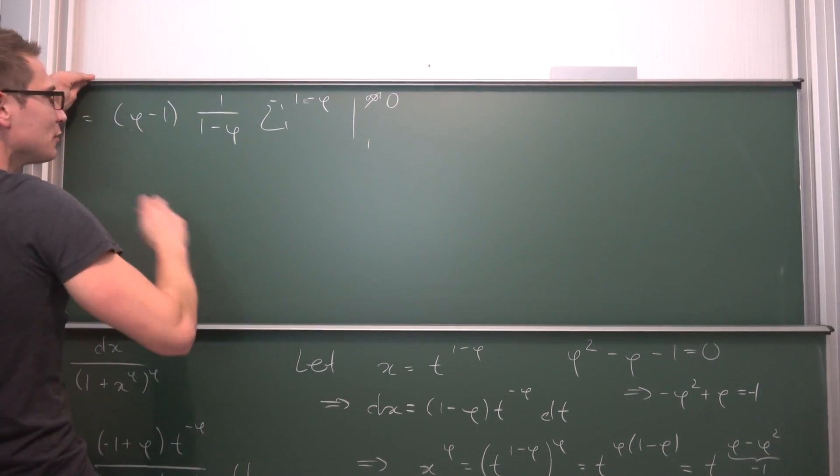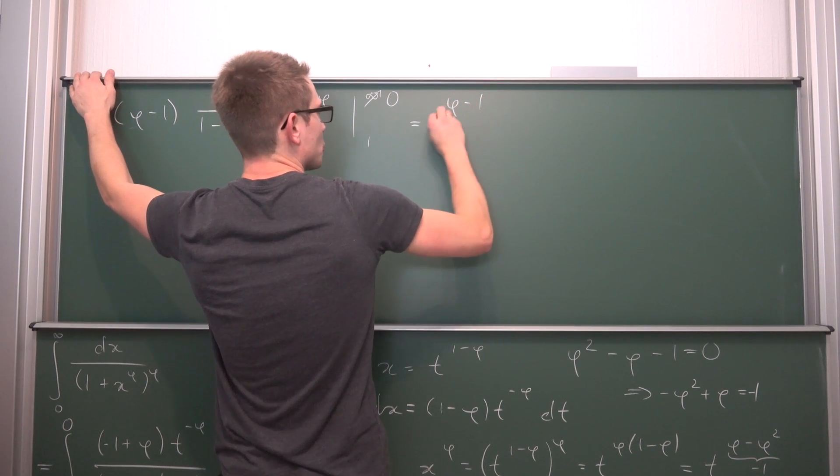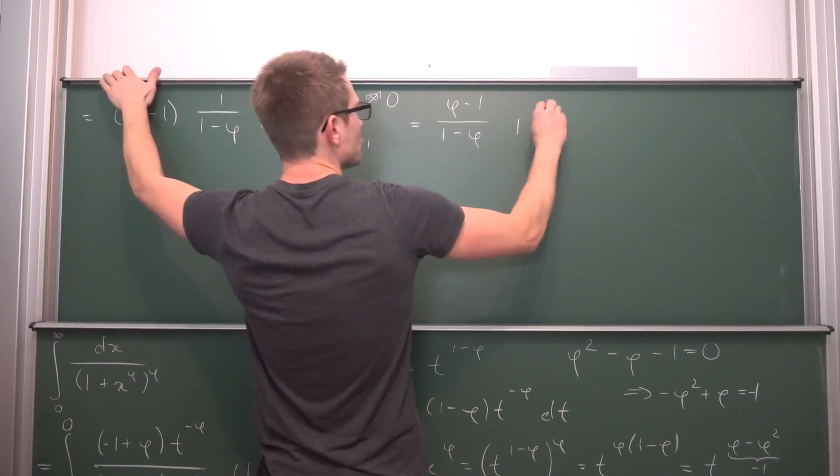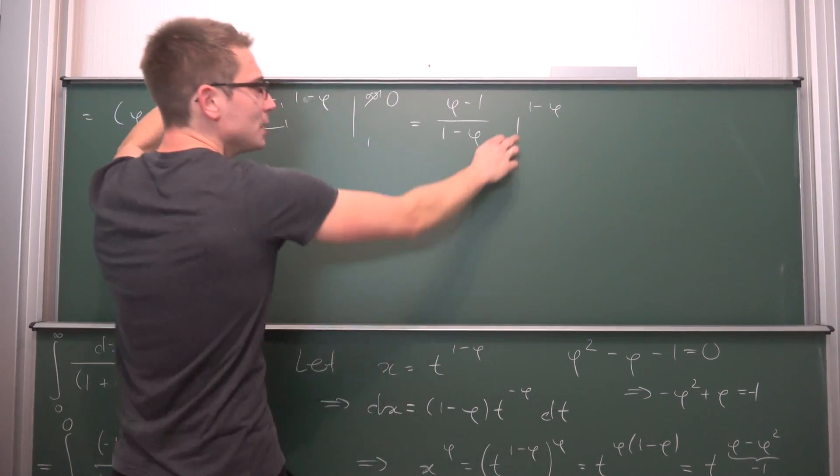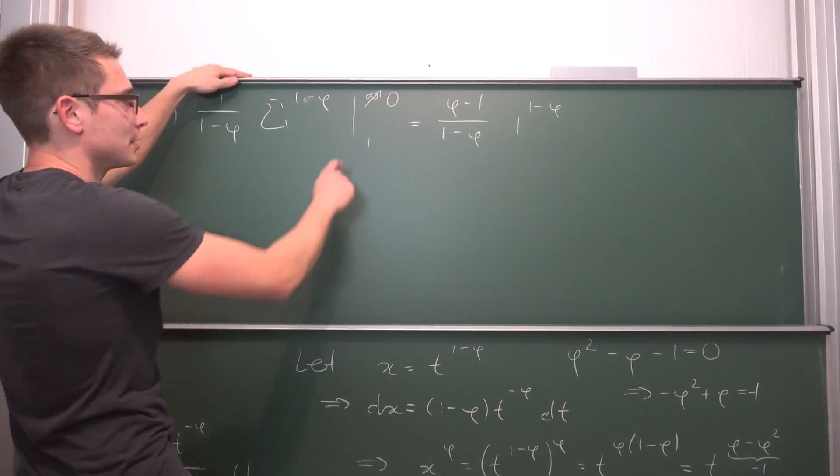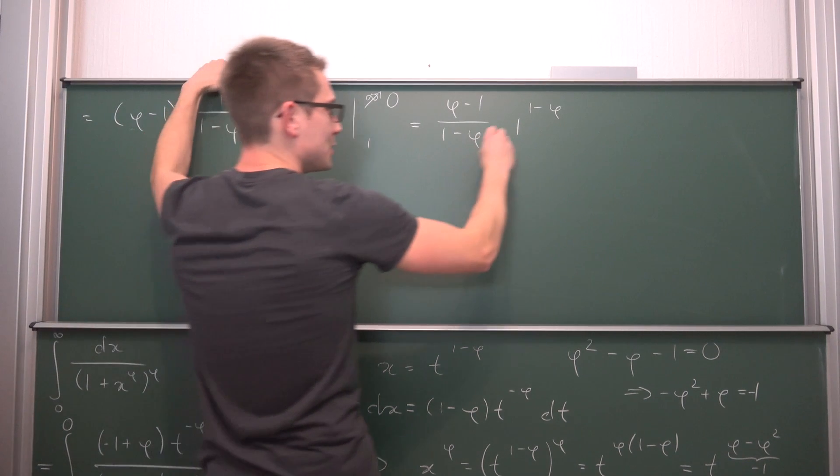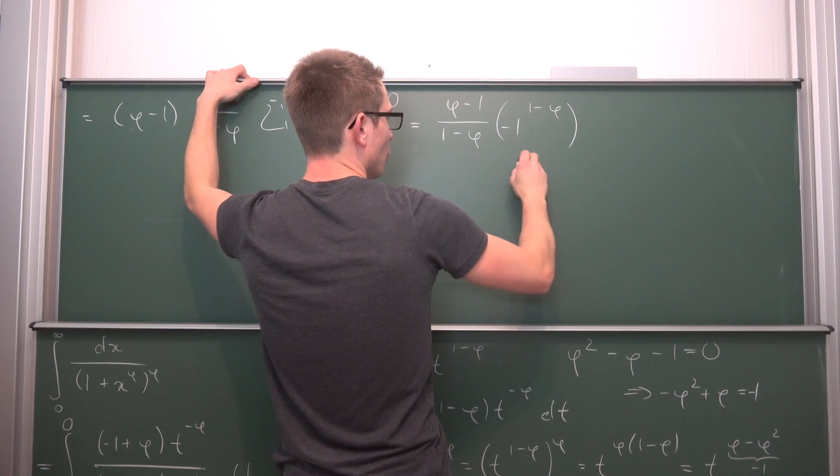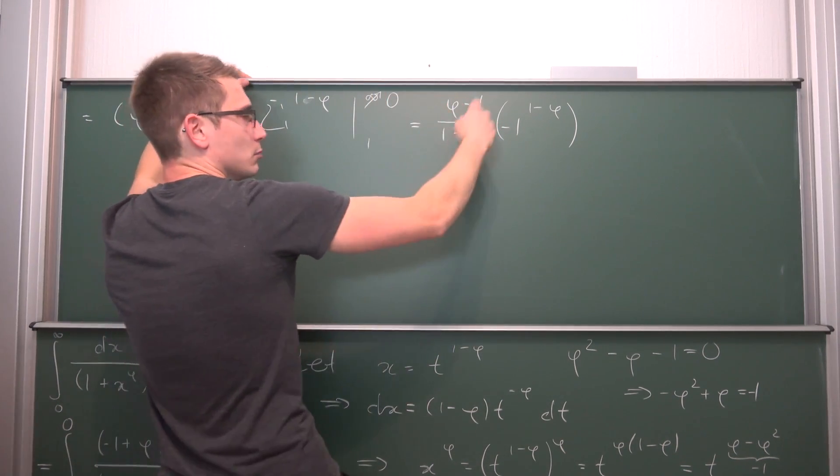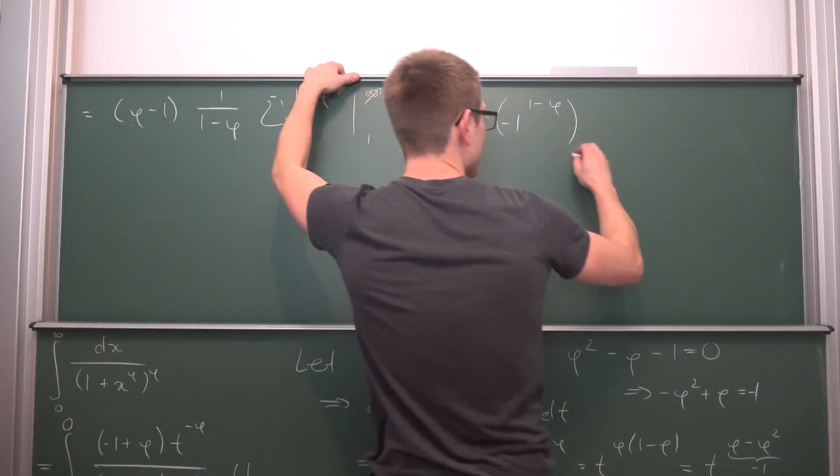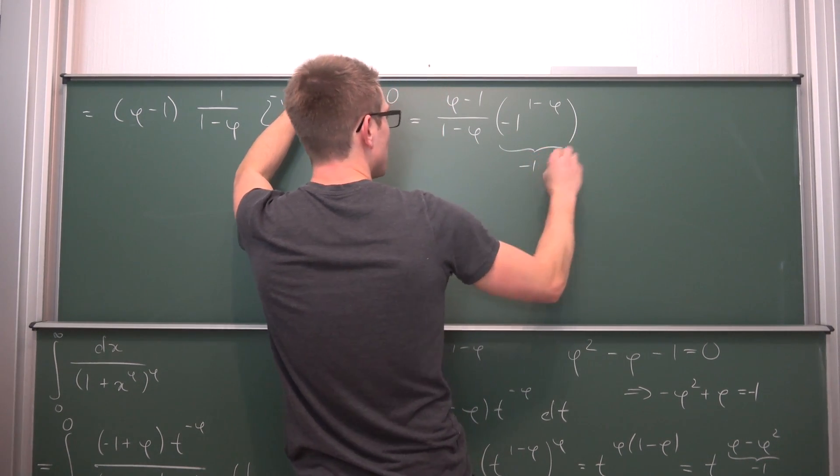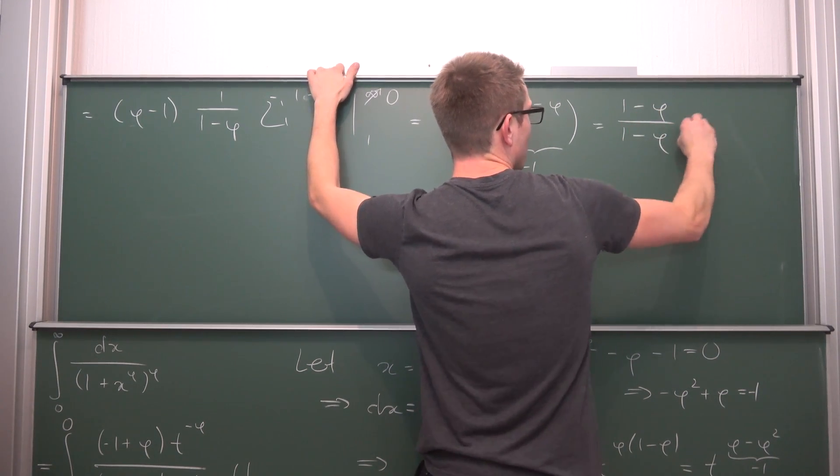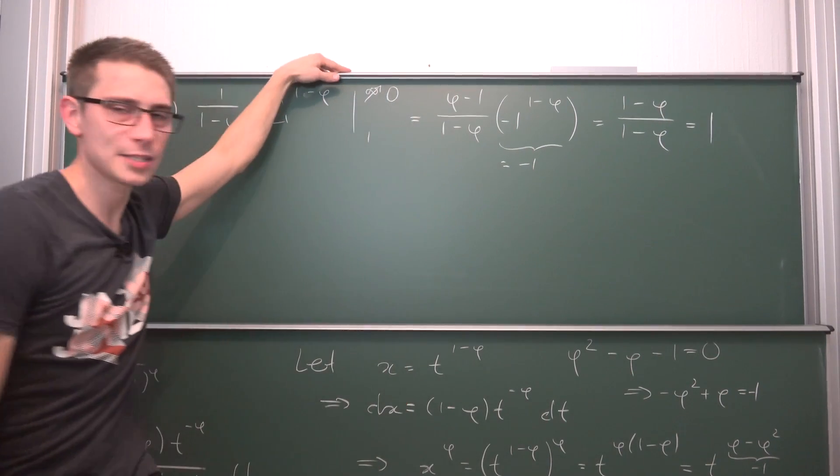So the only thing that's really left is phi minus 1 divided by 1 minus phi. Then we are going to have 1 to the 1 minus phi. Obviously this right here, and don't forget, this is the second part of integration, we get a negative sign. This right here is just negative 1 overall. Meaning if we were to multiply the numerator by this very negative 1, we are going to get 1 minus phi divided by 1 minus phi, which is nothing other than 1.